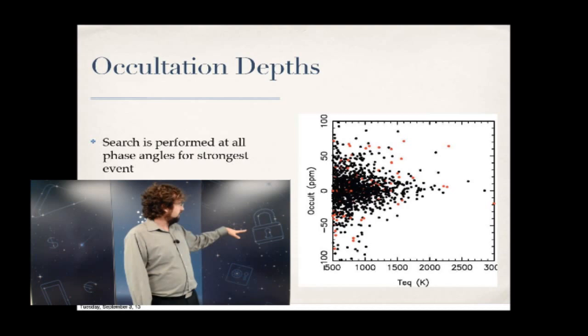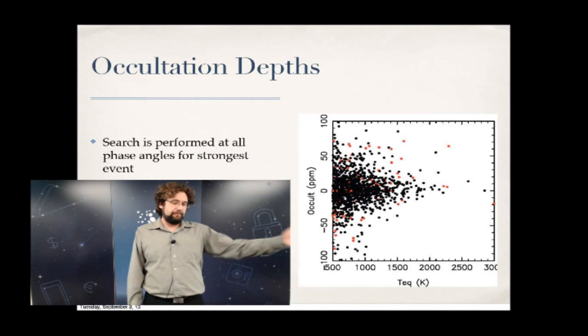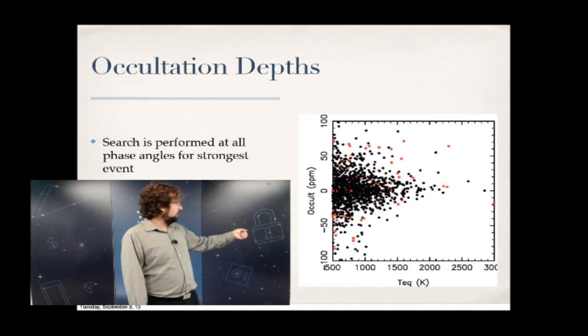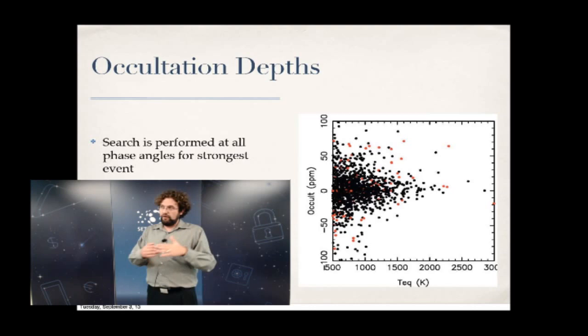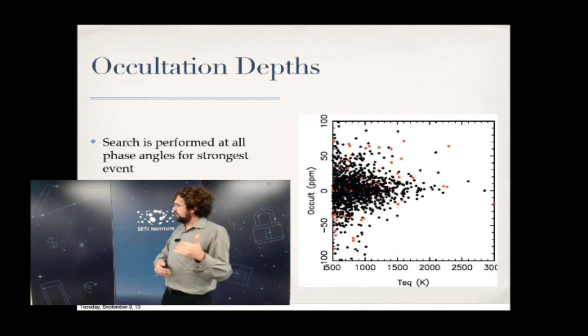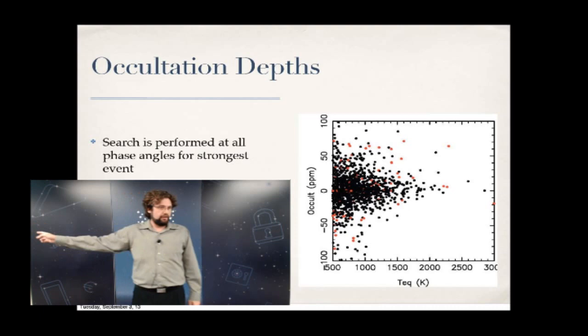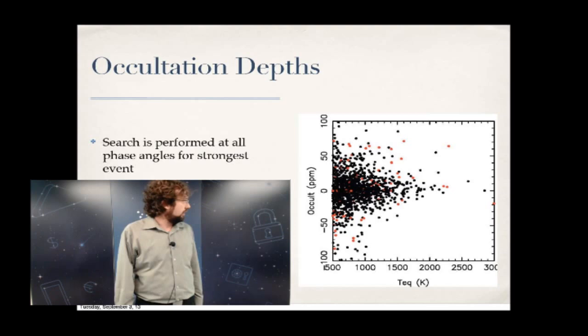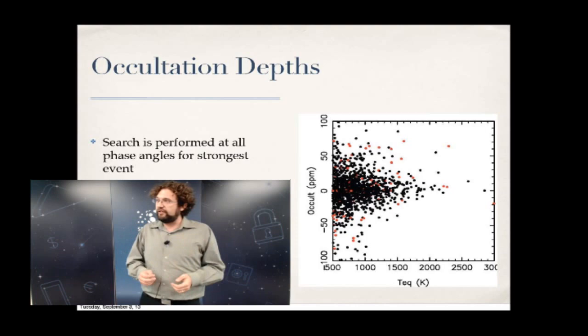Taking the largest objects — bigger than 7 Earth radii — plotted in red, you can see that once you go above around 1,000–1,100 Kelvin, a majority of those red points are above the zero line. On average I am detecting occultations from Jupiters in the Kepler light curves — a good dozen or more. There are also black points systematically above the zero line, meaning I'm finding occultations of smaller objects too.